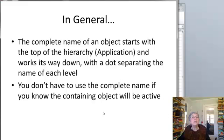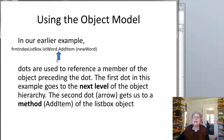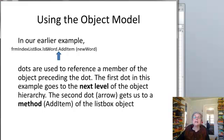In general, you could make a whole complete name for a form, starting with "Application" followed by however many steps you need — maybe the name of the workbook, then the name of the form, and so on down to what you need. Luckily, you hardly ever have to use a complete name if the containing object will be active, which it normally would be. Here's an example using "formIndexListBox.listWord" to get to the list box, and then I want to refer to a method, so I still use a dot, put "addItem," and then in parentheses the new word I want to add.